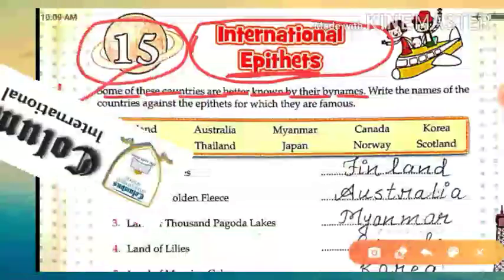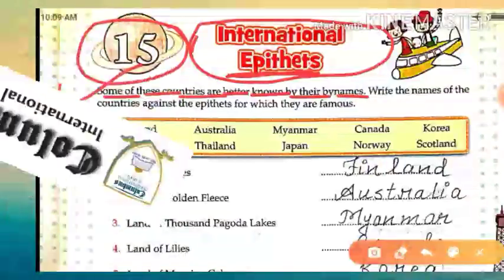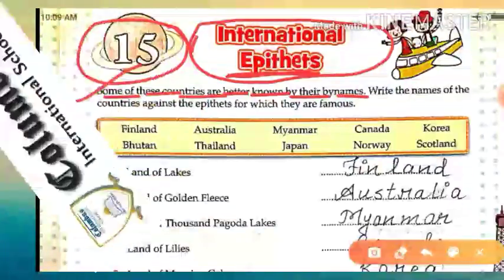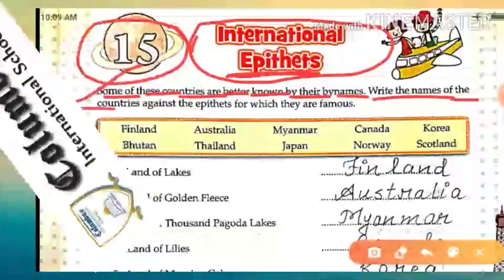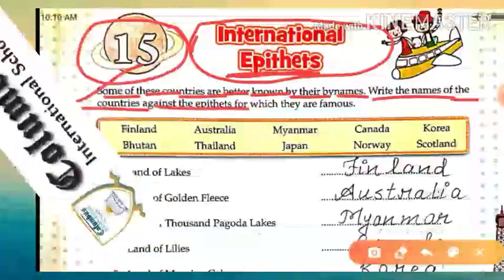Some countries are there which we can know better by their nicknames — by their second names, you can say. You have to write down the countries' names against the epithet — means jo bhi describe kiya gaya hai us country ke baare mein, what has been described about that country in this chapter.